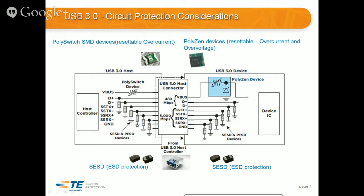Because we have six conductors with data at high speed, we need six protection devices. You can also use an array — we have six-channel arrays, four-channel arrays, and two-channel arrays. It's up to the customer's choice whether they want to use a bunch of little individual devices or one multi-channel device.